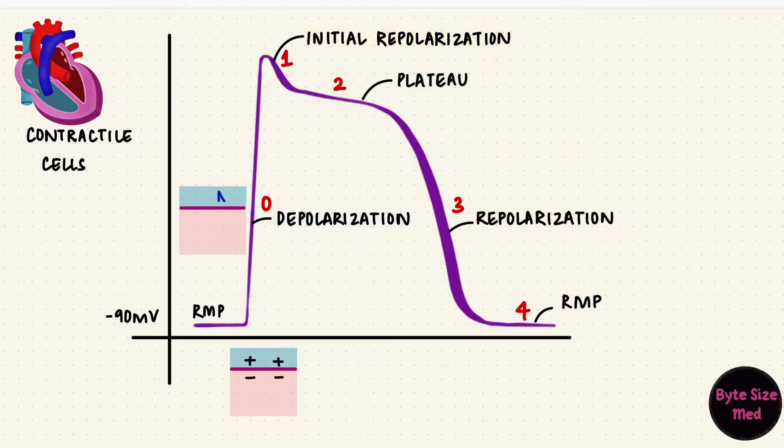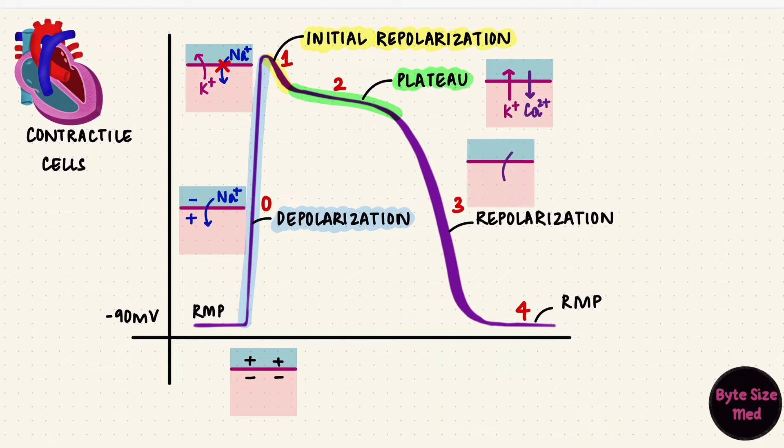Sodium uses the fast sodium channels to enter the cell causing depolarization. A small amount of this is also from calcium entering the cell. The sodium channels get inactivated and the potassium leaving the cell results in the initial repolarization. Calcium influx balancing the potassium efflux creates the plateau. At the end of the plateau the calcium channels close, and the potassium efflux results in repolarization back to the resting membrane potential. That's contractile cells.